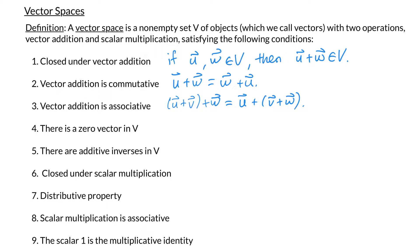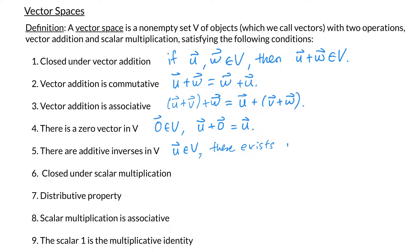Property 4 says there is a zero vector in V. That means I have some special object labeled as the zero vector such that whenever I take any other object u in V and add the zero vector to it, I end up with u again. Property 5 says there are additive inverses in V. That means for any object u in V, there exists another object w so that u plus w gives the zero vector, and we typically label w as negative u.